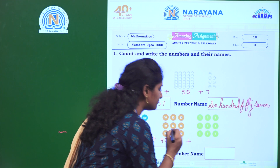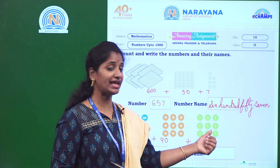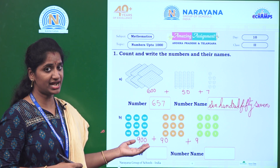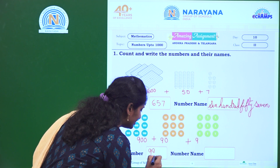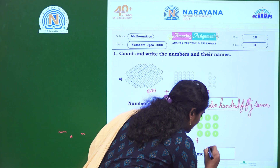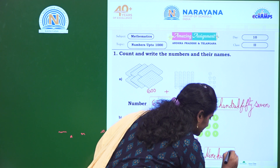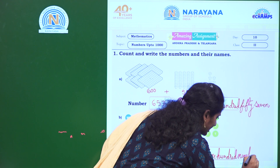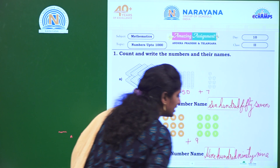How many ones? 1, 2, 3, 4, 5, 6, 7, 8, 9. Nine ones means 9. So, what is the number? 999. Write here the number 999. The spelling of 999 is: N-I-N-E nine hundred, H-U-N-D-R-E-D, and ninety N-I-N-E-T-Y, and nine N-I-N-E. 999.